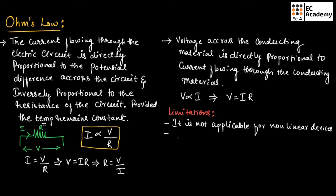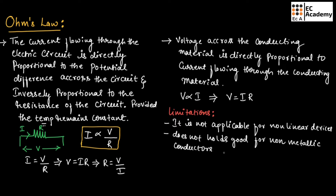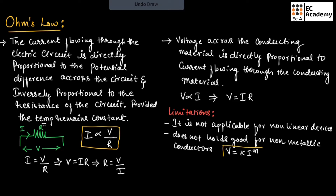Ohm's law does not hold good for non-metallic conductors such as silicon carbide. For non-metallic conductors, we can write the expression as V is equal to K into I to the power of M, where K and M are constants.